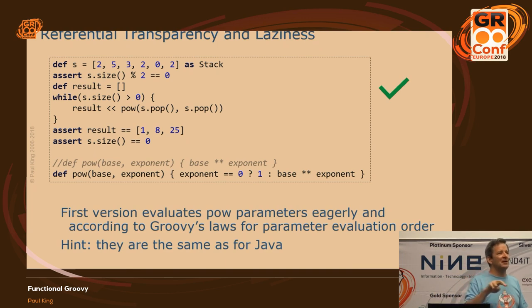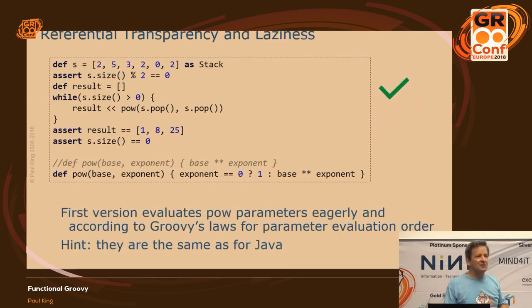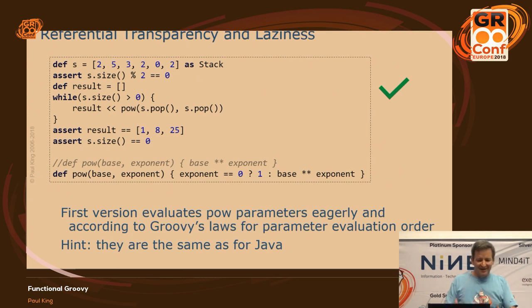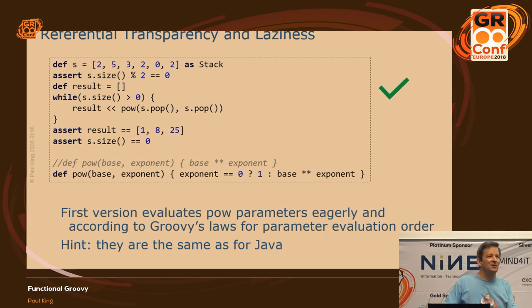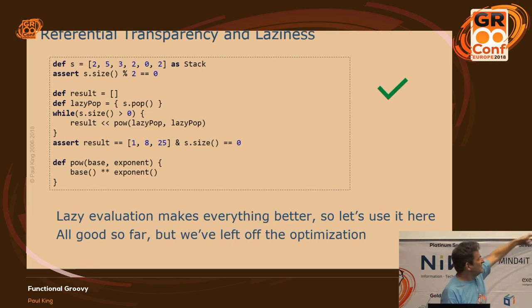With referential integrity, every variable can be replaced by its value and vice versa at any time — so order doesn't matter. Now we've heard that laziness is a good functional thing, so let's introduce laziness into this example. Instead of just calling s.pop, I've got a little closure called 'lazyPop' that I pass in. Inside my power method, instead of base to the exponent, I'll call base to get the value and then raise it to the exponent. That works fine.